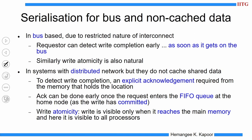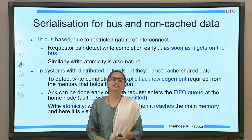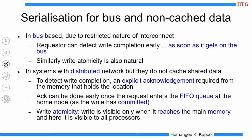Moving on to serialization for consistency, we take three cases. The first case is a bus-based system. The second case is a distributed scalable network where we do not permit caching of shared data. The third case is our scalable cache coherence protocol. In a bus-based system, serialization is straightforward because as soon as we get the bus, we are sure the write is complete. In a distributed network without caching, shared data is only at the home node — no other cache can hold this data. So if processor N1 wants to do a write, it sends the write to the home node.